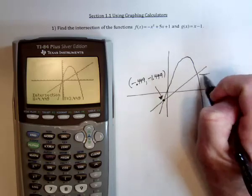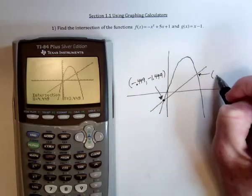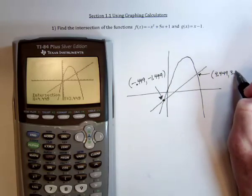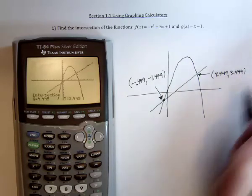And so we've got this intersection point. 4.449 for the x value and 3.449 for the y value. And there are the two intersection points.